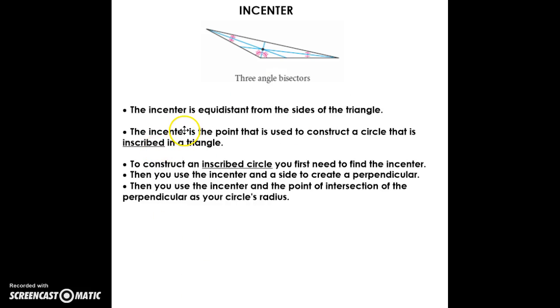Here are some properties about the incenter. The incenter, because it's on the angle bisectors, is equidistant from the sides. If I were to draw a perpendicular to each of these sides, it would be equal in distance. The incenter is the point used to make an inscribed circle.